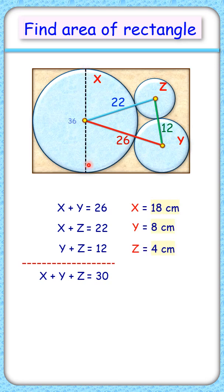Thus the diameter here is 36, or the width of the rectangle is 36 cm. The radius of this circle is 18 and for this is 8 cm.